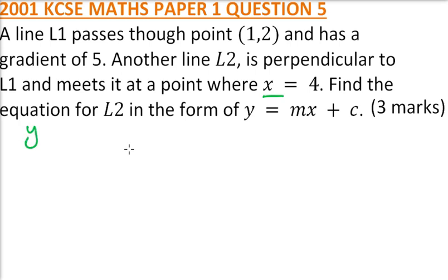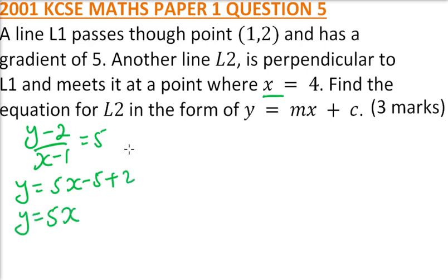We say it is (y minus 2) divided by (x minus 1) is equal to the gradient 5. You cross multiply, you get y equals 5x minus 5, and then you add 2 where you get y equals 5x minus 3.